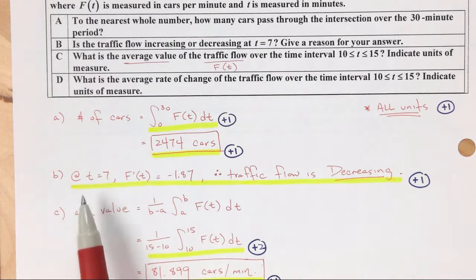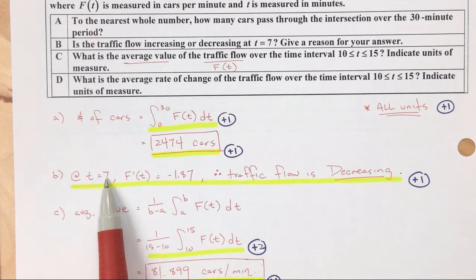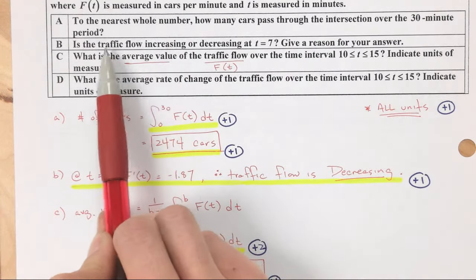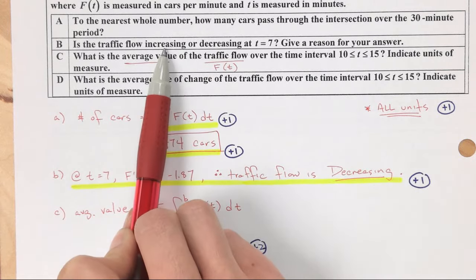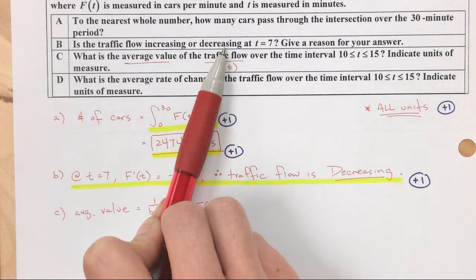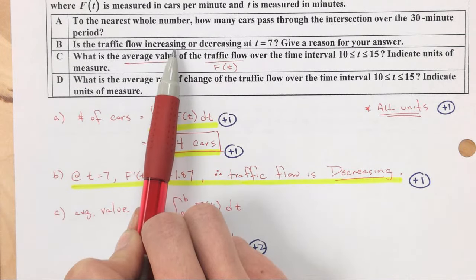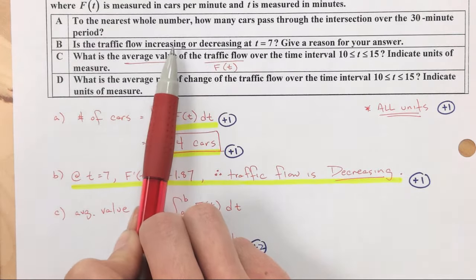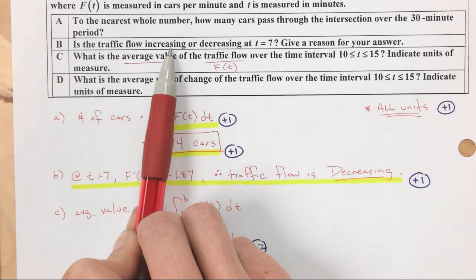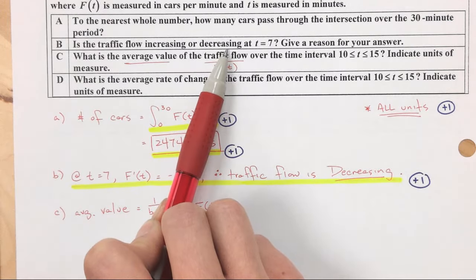So for B, I'm going to start with that t equals 7. How do I know if flow is increasing or decreasing? Well, how do I know if something, if y, let's say, is increasing or decreasing? I'm looking at the slope. So is the slope positive or is the slope negative? So what I can do is I can find the derivative and see if it's positive or if it's negative because that tells me about the slope. The derivative is the slope.